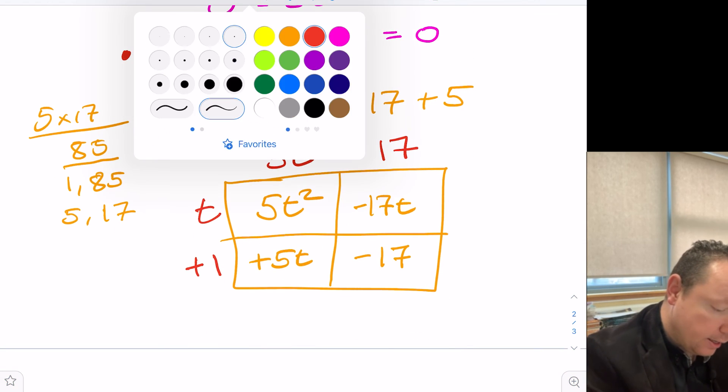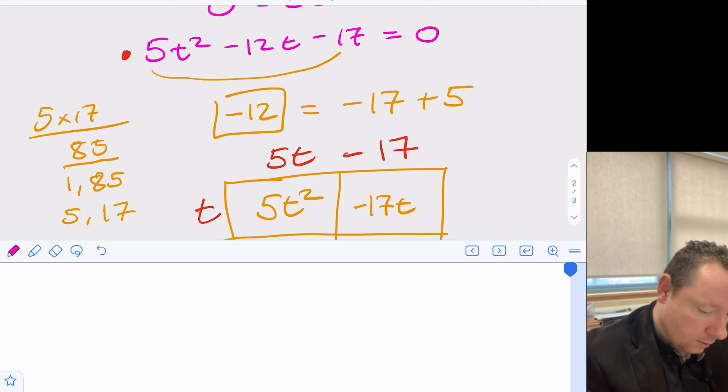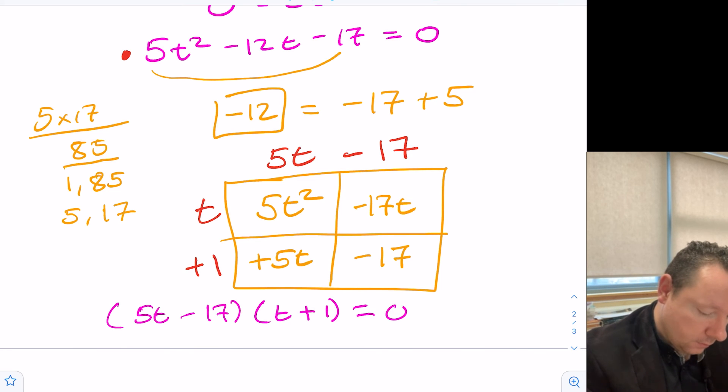So in the end, after all that work or any method you prefer for factorizing, you get 5t - 17 and you get t + 1, and that equals 0. If you can get to that part, you can get a mark there.